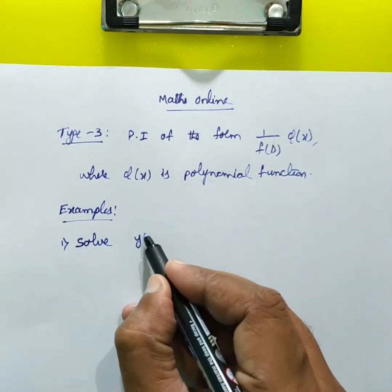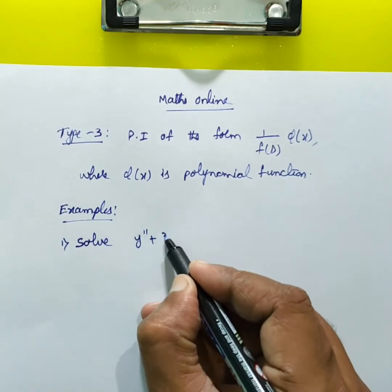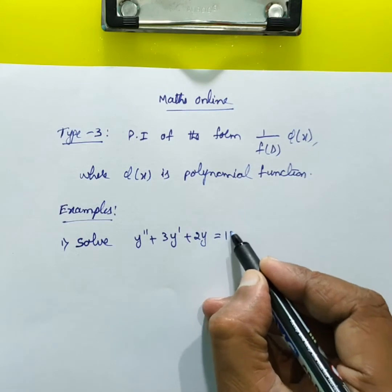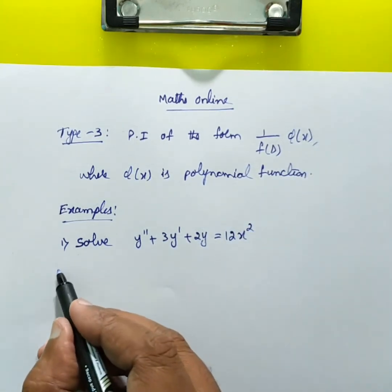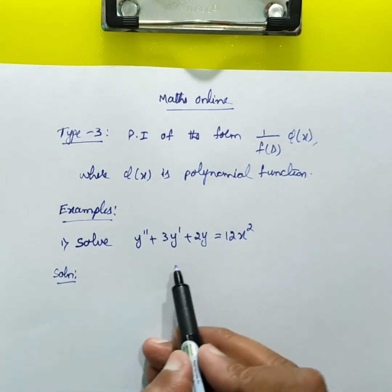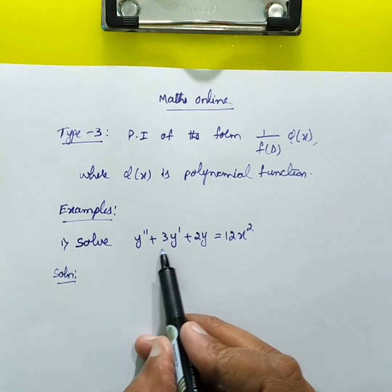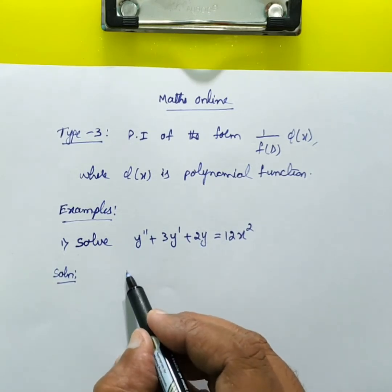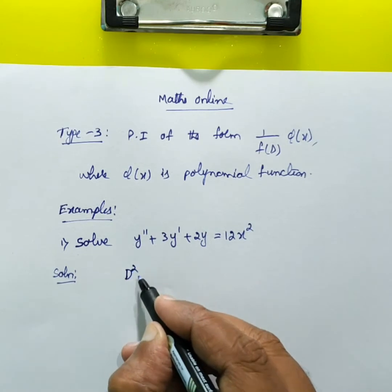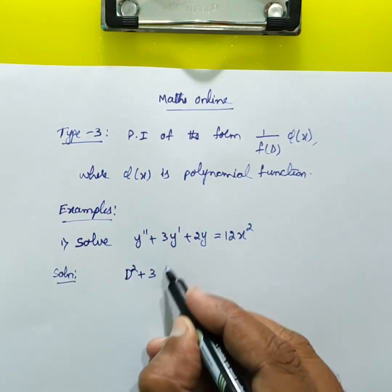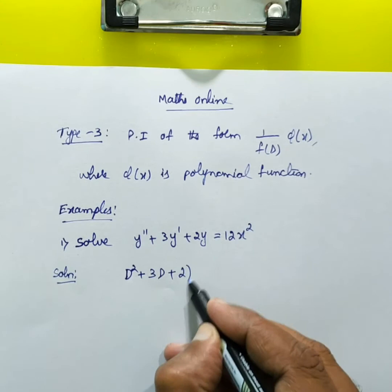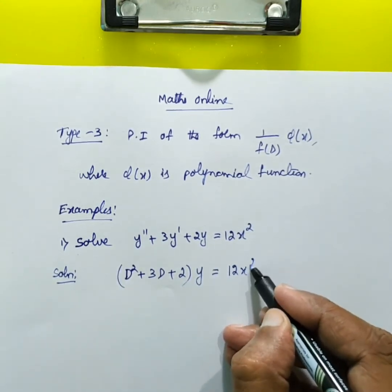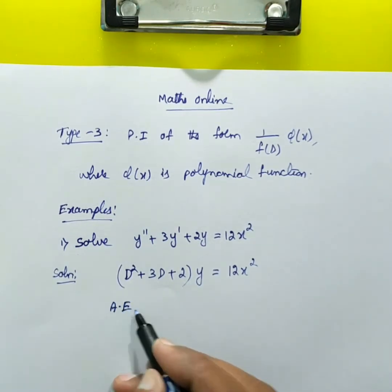Solve: y double dash plus 3y dash plus 2 times y equals 12x squared. Let us write down the auxiliary equation. We will try to write this differential equation in the form of the operator. So y double dash is D squared plus 3 times D plus 2, with y taken as common, equals 12x squared.